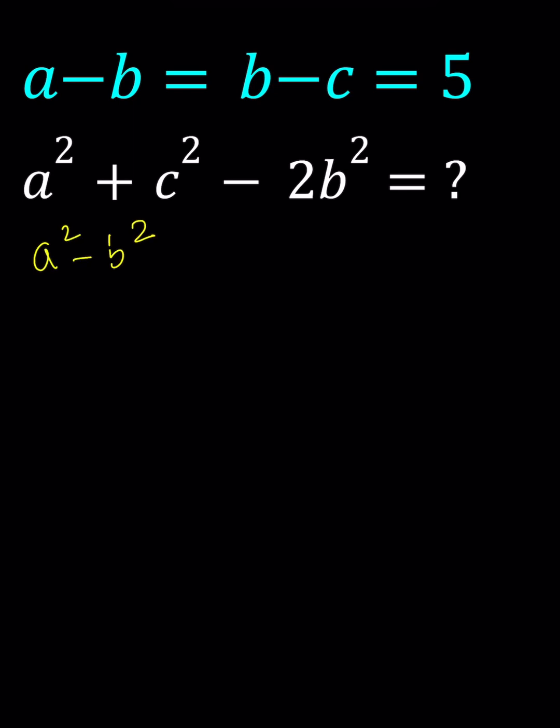Let's write this as a squared minus b squared plus c squared minus b squared. Now we're going to factor these by using difference of two squares.